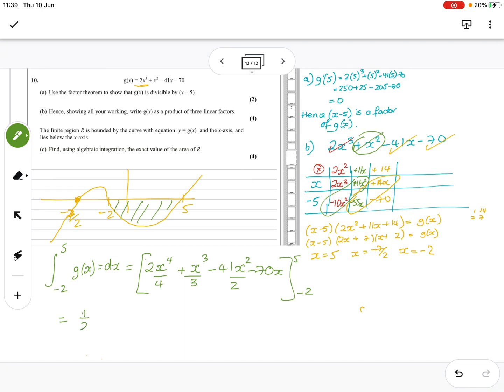Between -2 and 5. So we're going to do (1/2)(5⁴) + (1/3)(5³) - (41/2)(5²) - 70(5) - [(1/2)(-2)⁴ + (1/3)(-2)³ - (41/2)(-2)² - 70(-2)].